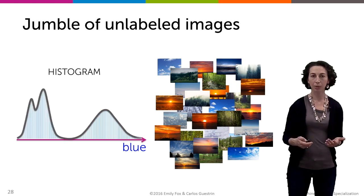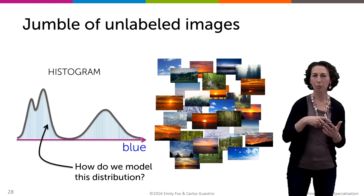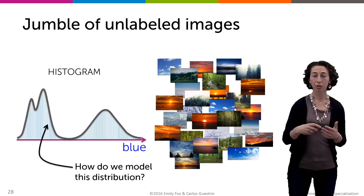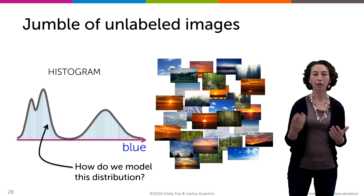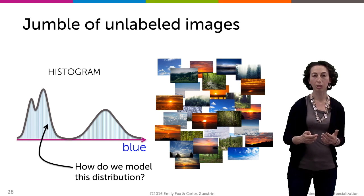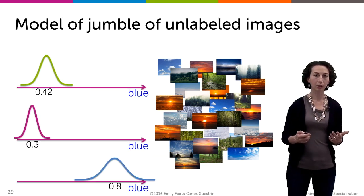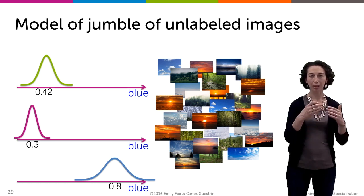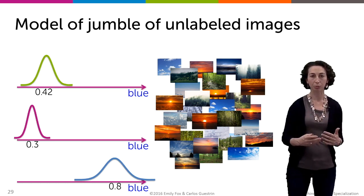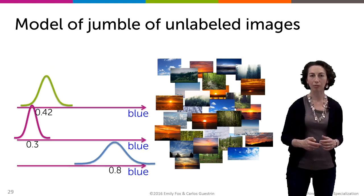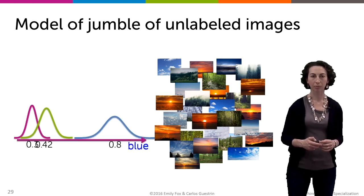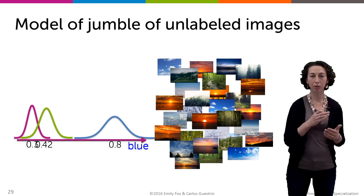But we're going to take a model-based approach. Somehow we want to model this distribution over blue intensity in our entire data set. To do this, we're going to take each one of our category-specific distributions and simply average them together. So the resulting density is going to be an average of each one of these category-specific Gaussians.